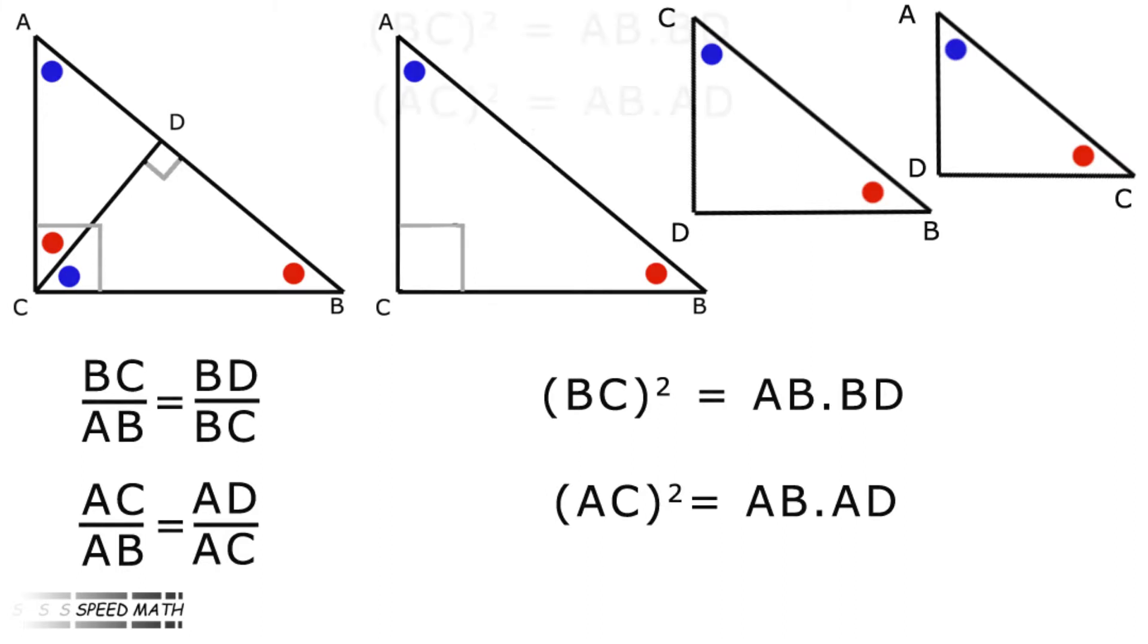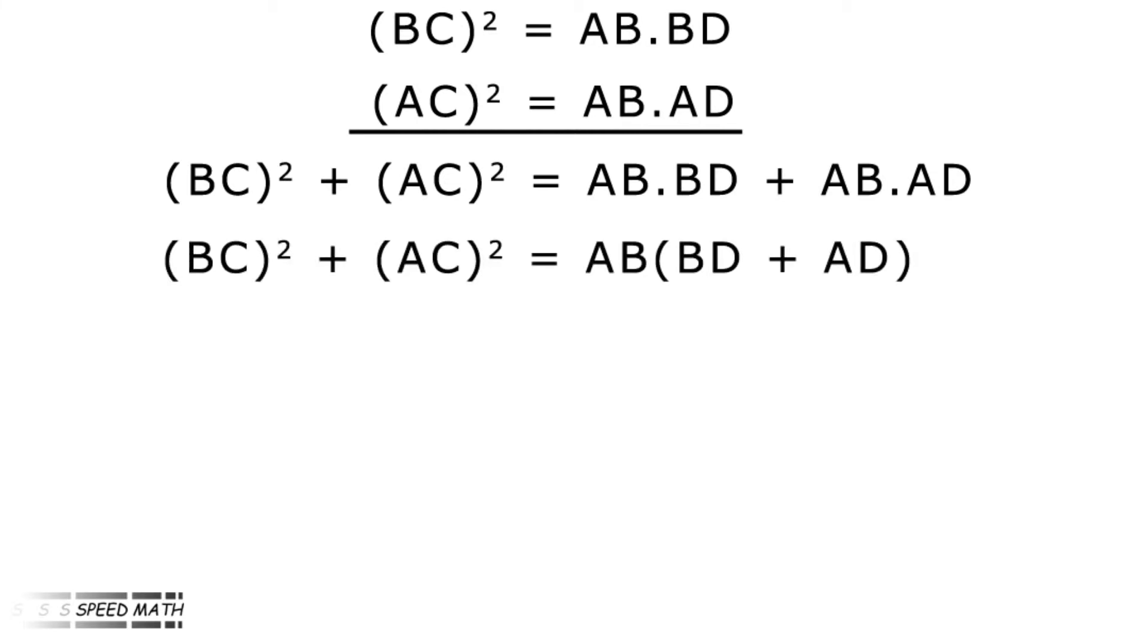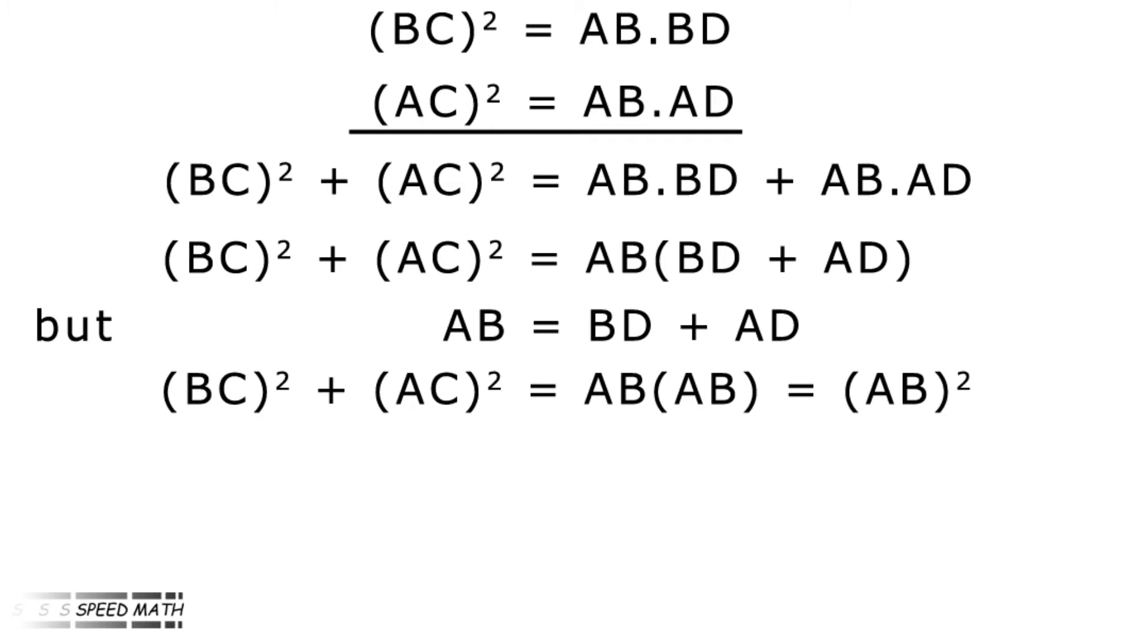Taking these two equations to the next screen and adding them, we get BC squared plus AC squared equals AB times BD plus AB times AD. Factorising the right-hand side by taking AB outside the brackets, BC squared plus AC squared equals AB bracket BD plus AD close bracket. But from before, remember side AB was bisected at D. AB equals BD plus AD. So the right-hand side becomes AB times AB, that is AB squared.